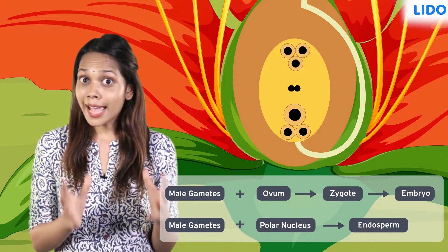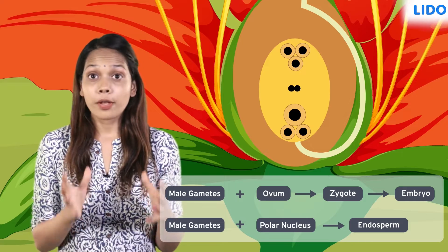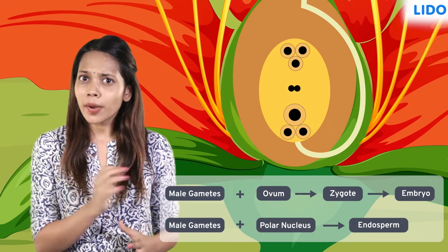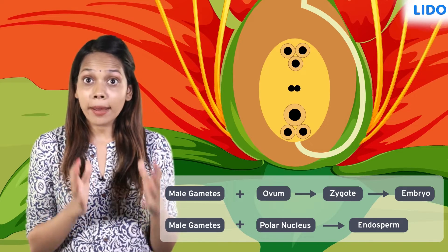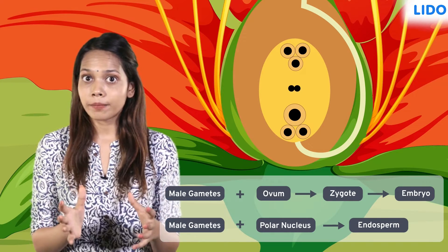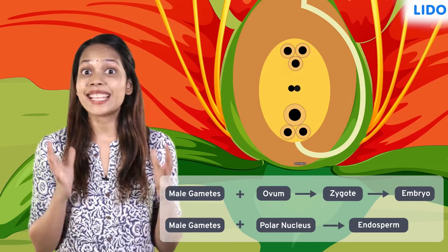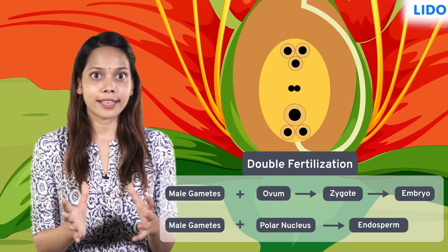As we saw, fertilization happens twice inside the embryo sac. Therefore, this is known as double fertilization.